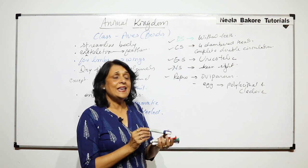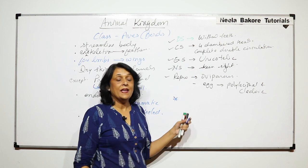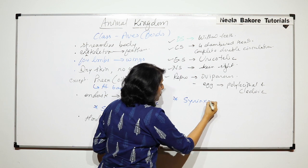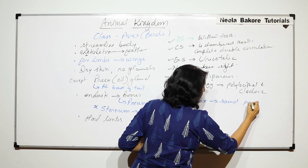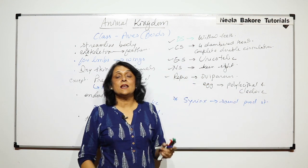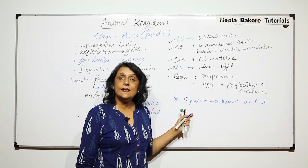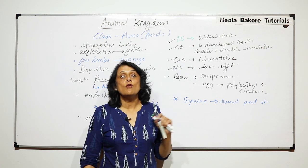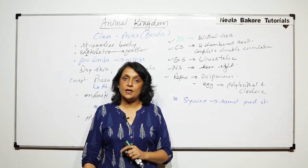In case of birds we find some unique things also. They have syrinx which is the sound producing structure which is found in case of birds. So these are some general characteristic features of birds and all these characteristics are keeping in mind that they have to fly. So these also come under the flight adaptations in case of birds.